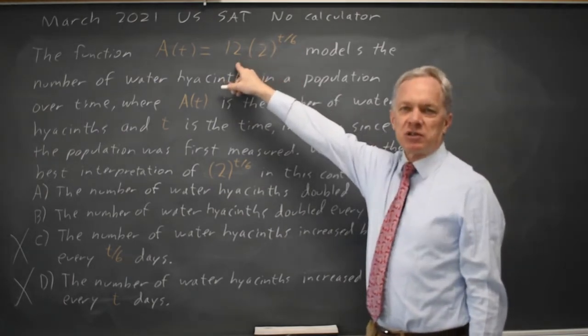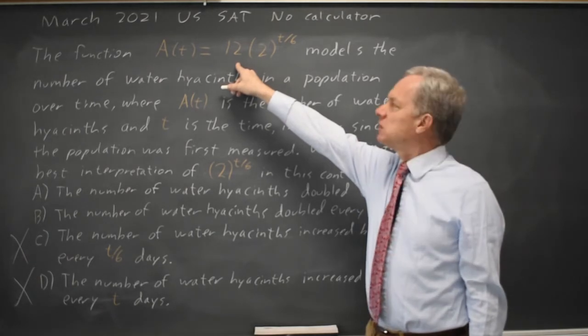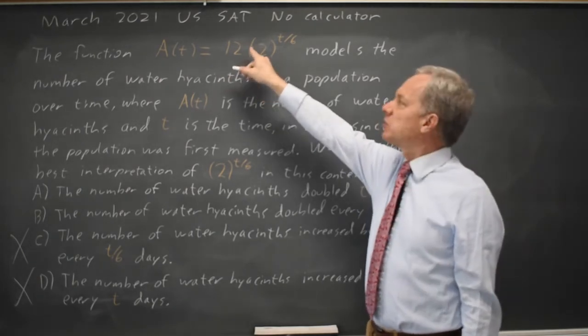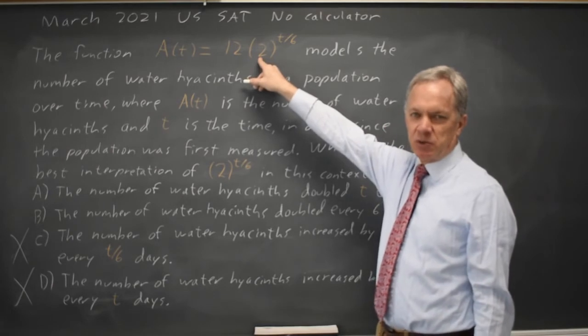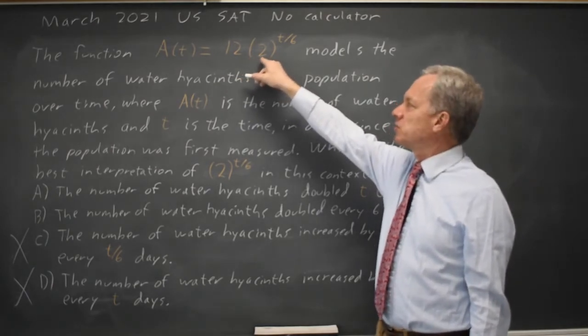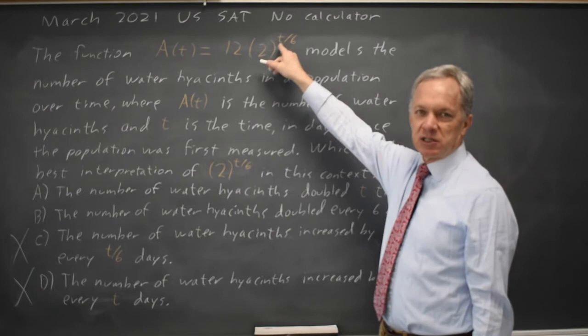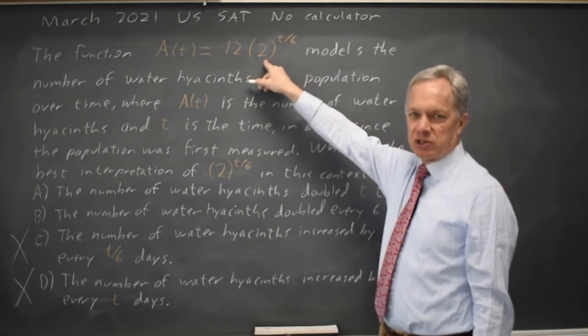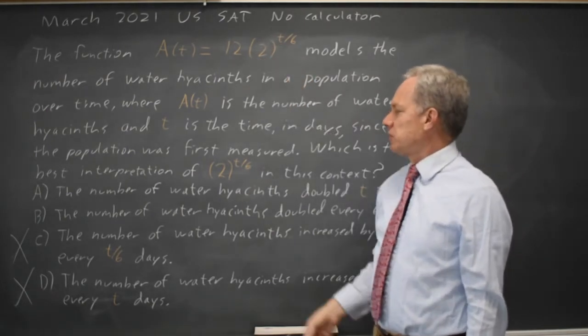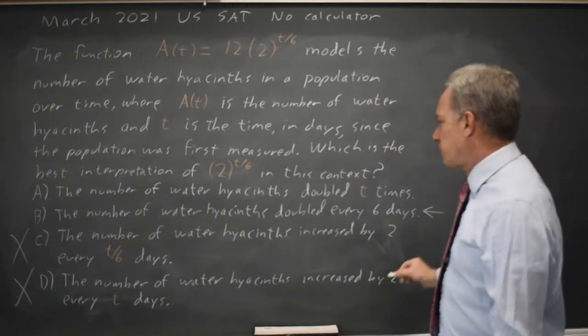We multiply the number of flowers at time 0 by 2. At time 0 we get 12 times 2 to the 0 which is 12 times 1. At time 6 we get 12 times 2 to the 6 over 6 which is 12 times 2 to the 1st or 24. We double after 6 days so that would be choice B.